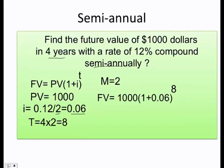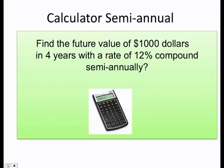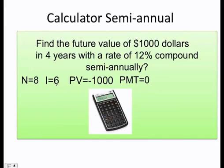Remember, you always do the parenthesis, the exponent, and then you multiply. Finally, your answer is going to be $1,593.85. In the calculator, you do the same, but remember, now n is not 4, it's 8. That comes from 4 times 2. The rate is not 12 now, it's going to be 6, which is 12 divided by 2. Present value does not change, payment is zero, and your future value is going to be $1,593.85.